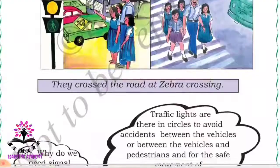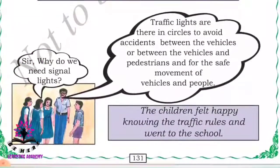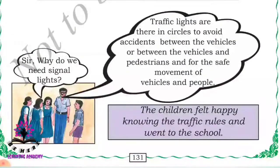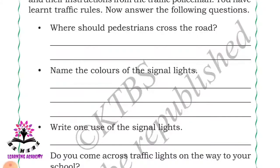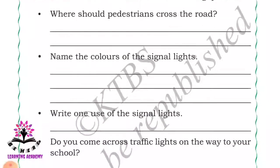Look there, the green light is on - now we can cross the road on the zebra crossing. Why do we need signal lights? Traffic lights are there at the circle to avoid accidents between vehicles, and between vehicles and pedestrians, and for the safe movement of vehicles and people. So Savita, Fatima, Neeraj, and Mary have also understood some traffic signals, as the traffic policeman gave them instructions.